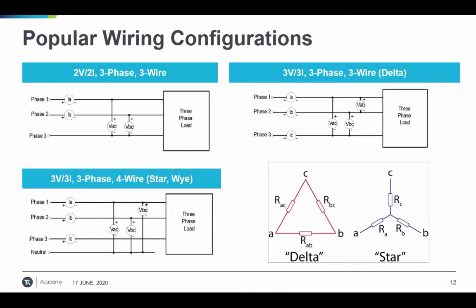The 3V3I configuration is called the three-watt meter method and uses three voltage and three current probes to make three-phase measurements. You can make per-phase measurements referenced to a neutral if available in a star configuration. If it is a delta configuration where neutral is not present, you make voltage measurements between phases, also known as line-to-line voltages. Other wiring configurations include one-phase two-wire using one voltage and one current probe — typically used for measuring the DC bus of the drive — and one-phase three-wire using two voltage and two current probes, only available for the input of the drive.